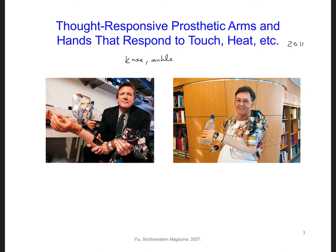Now the basis of these prostheses are electrical signals, or electromyography — EMG signals — traveling along nerves and into muscles. To create an effective prosthesis, the researchers need to know the strength of these signals, and they need to make sure that there is minimal crosstalk between the signals.